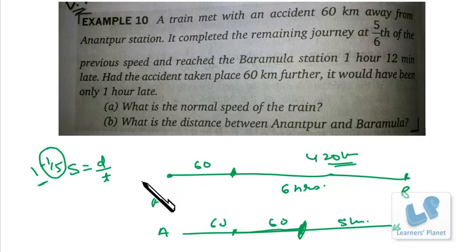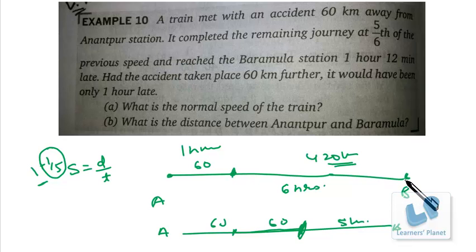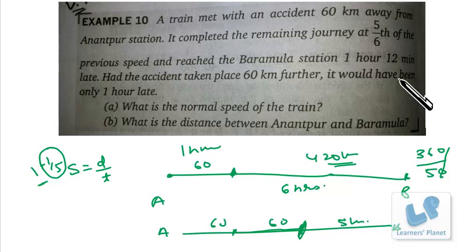Let me do the verification. The train meets an accident 60 km from Anantapur, so 1 hour is spent covering that. The remaining distance is 360 km (420 minus 60), covered at 5/6 of 60, which is 50 km/h. So 360 km at 50 km/h takes 7.2 hours, that is 7 hours 12 minutes. The normal time for that stretch is 6 hours, so the train is 1 hour 12 minutes late — which matches the problem. This verifies our answer.